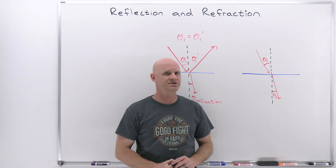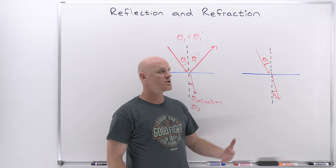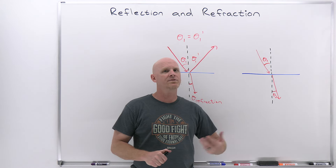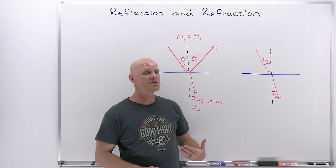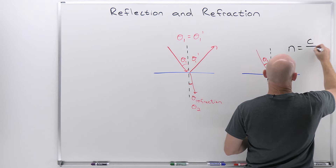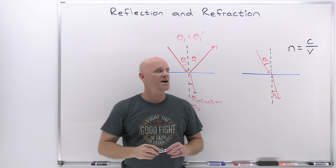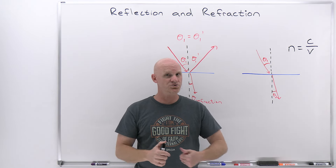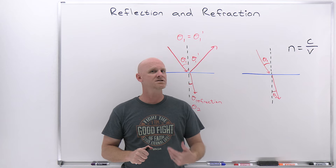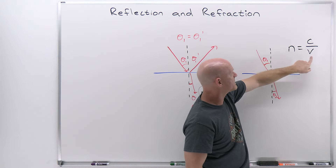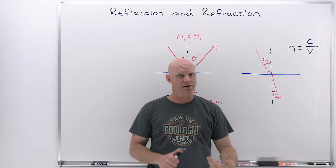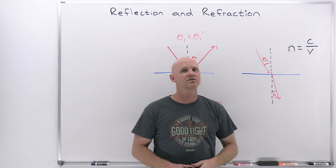Now let's focus on refraction for the rest of the lesson. Before doing that, we need to talk about the index of refraction, n, which equals the ratio of the speed of light in a vacuum relative to the speed of light in that medium. Light in any medium is going to be slower than the speed of light in a vacuum, so this ratio is always greater than one. The bigger n gets, the slower the light is in that particular medium.